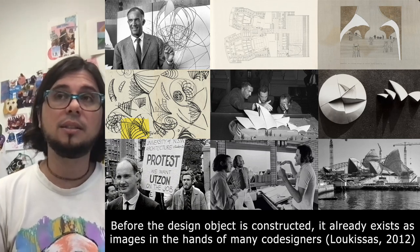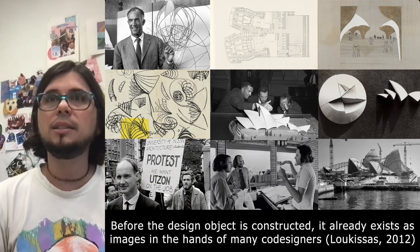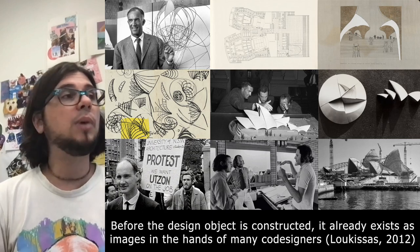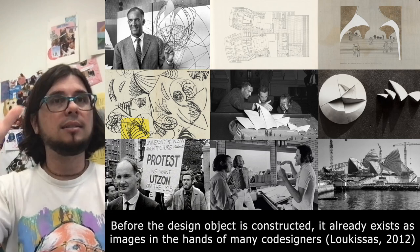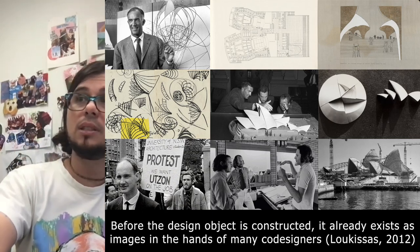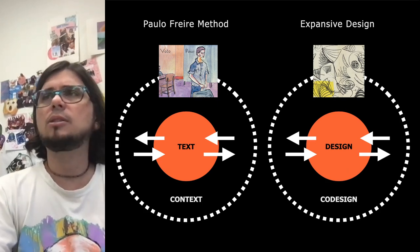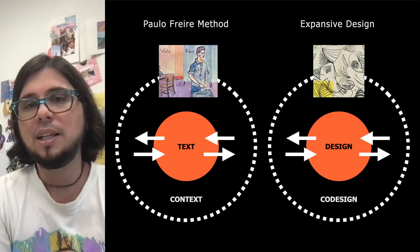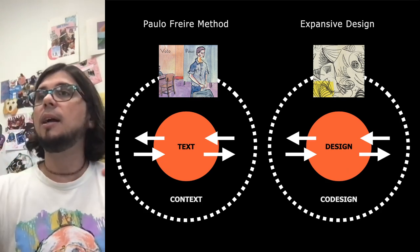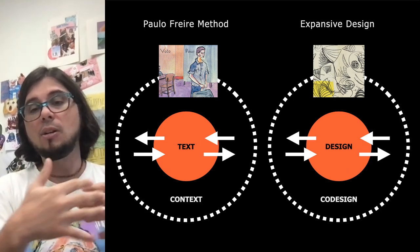So before the object of design is constructed, it already exists as images in the hands of many co-designers. I use the word co-design to help you remember that everything which surrounds a design — this process of coming up with a design — is co-design. Every design has a co-design around it. I took this insight from a book written by Lucas Saas called Co-Designers, which I really recommend — it's a completely different way of looking at co-design. In this book and in my thesis, co-design is the interaction between the design and the process of design. It's collaborative, but also sometimes competitive — so it's collective design.